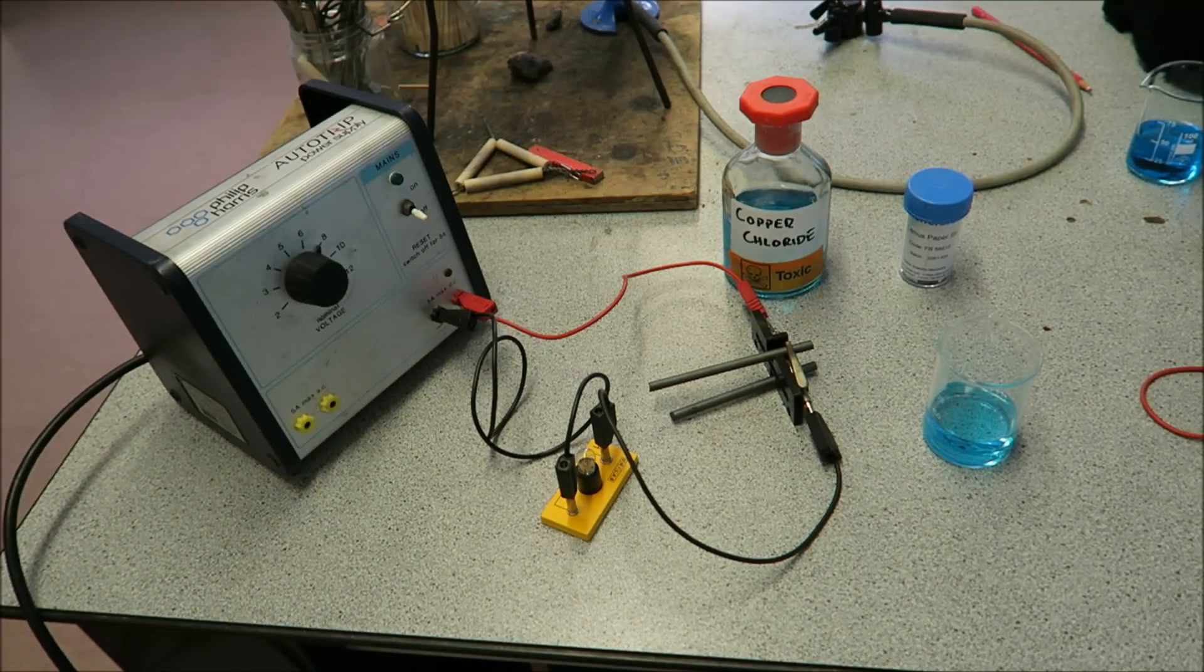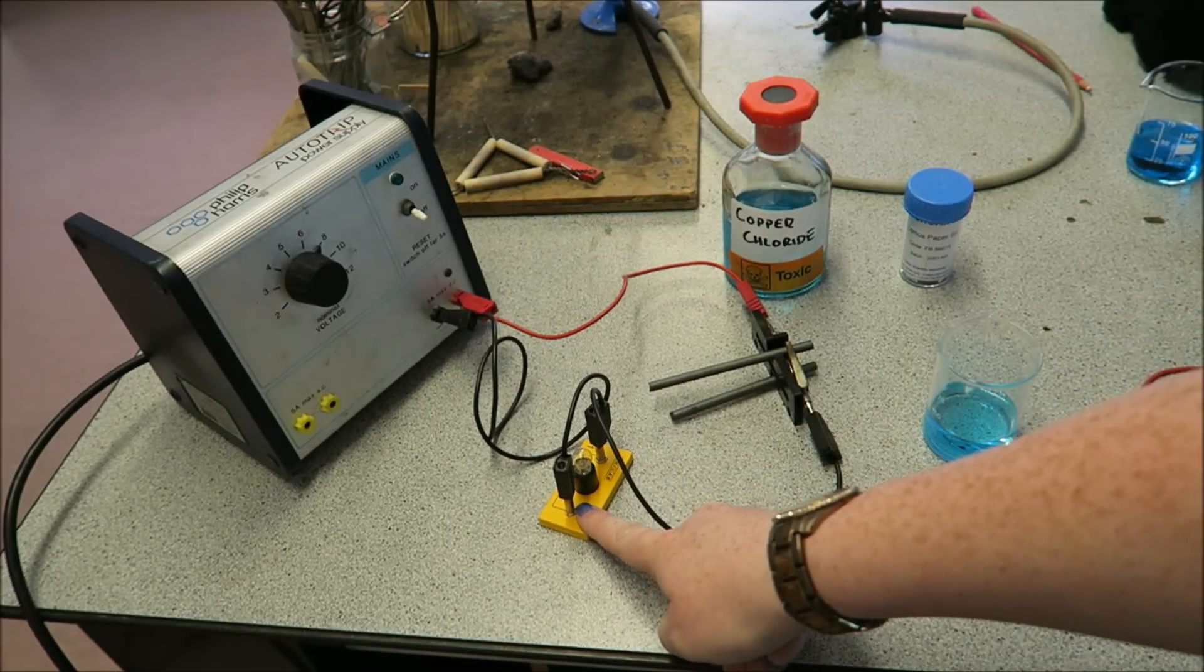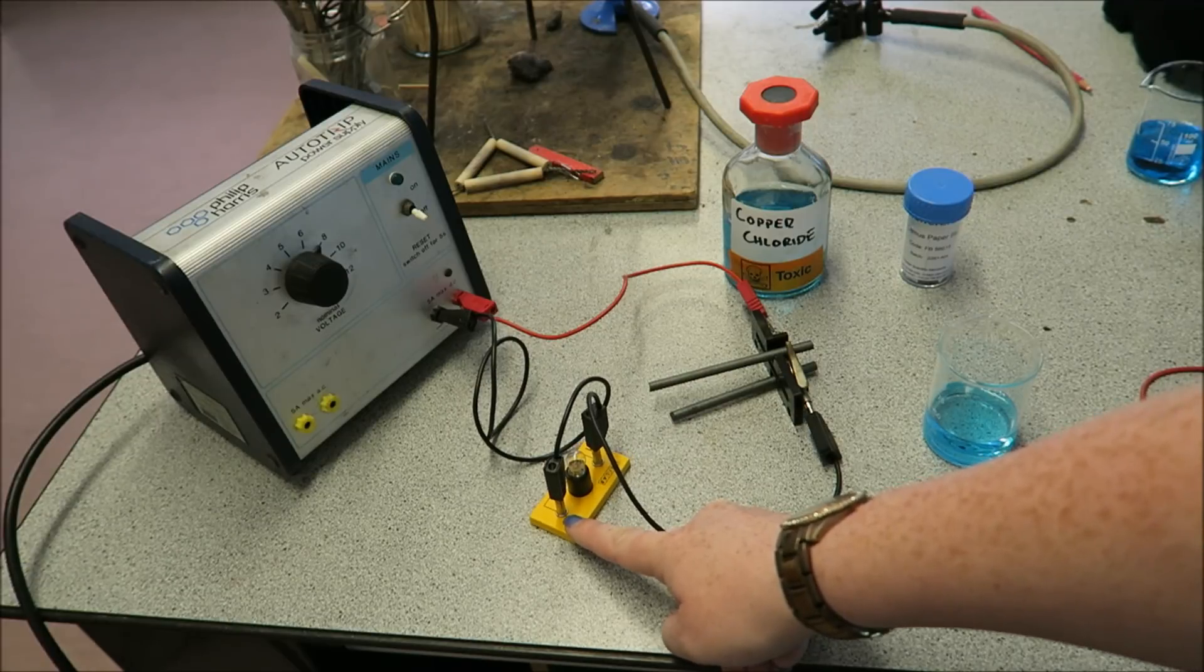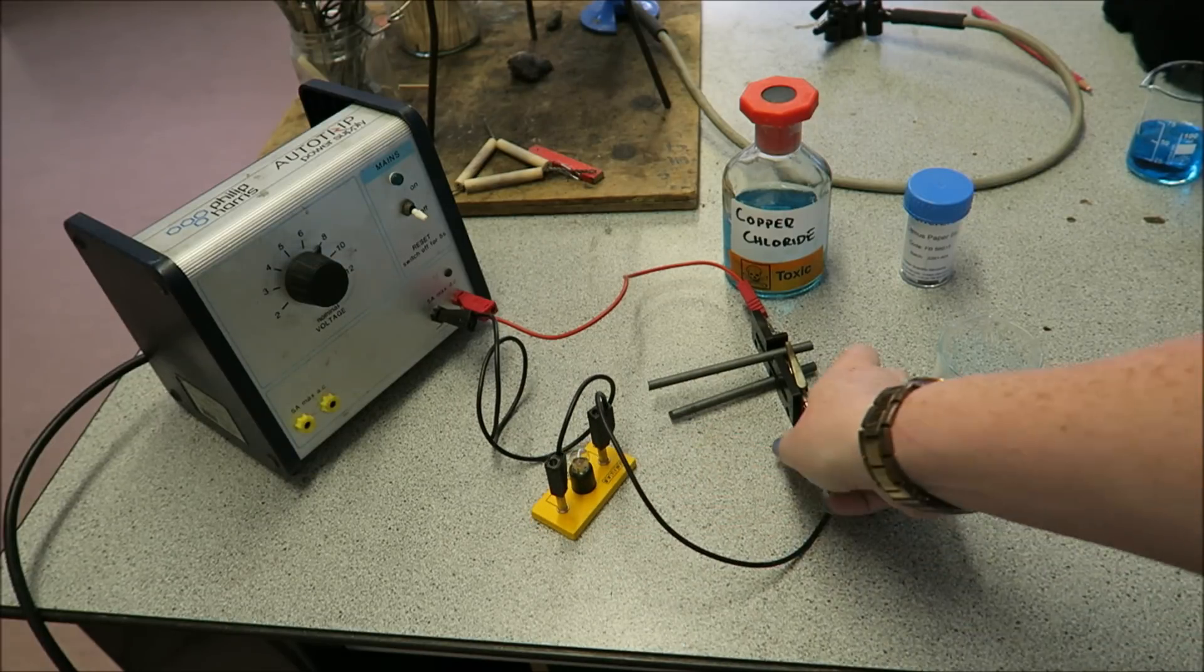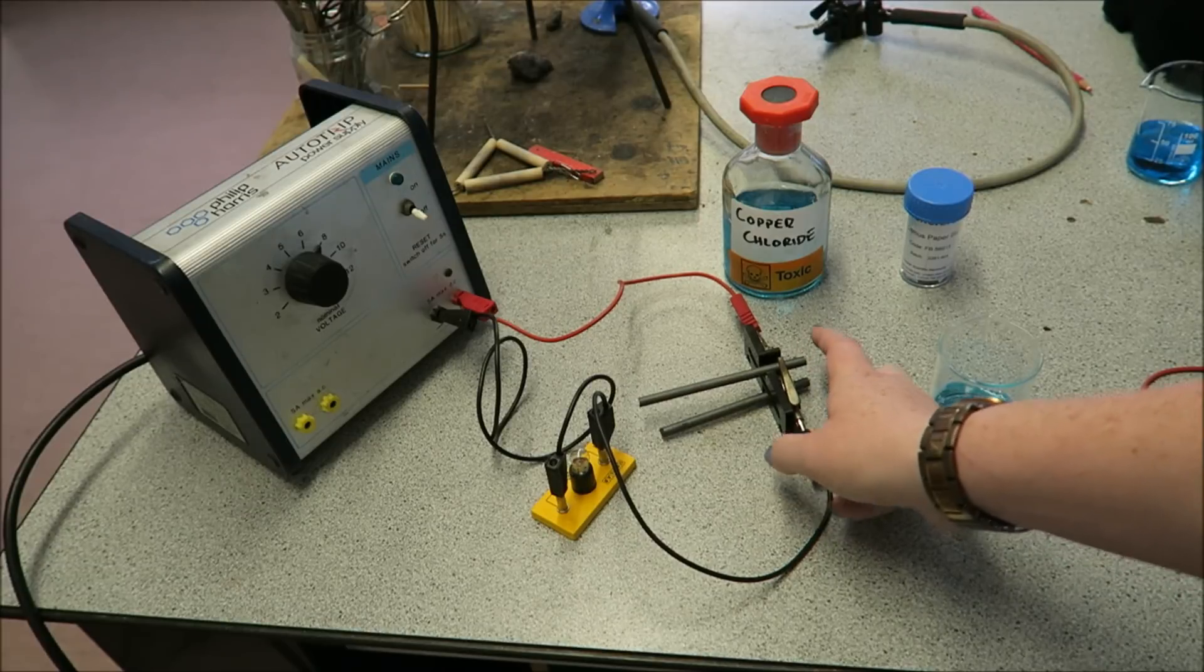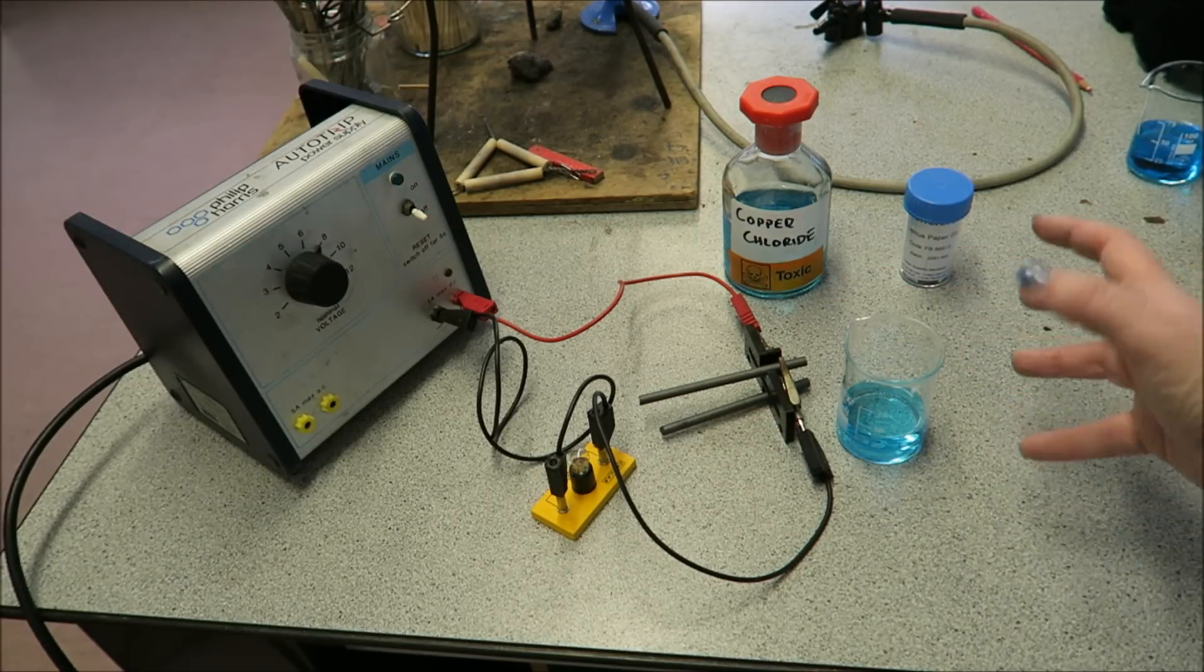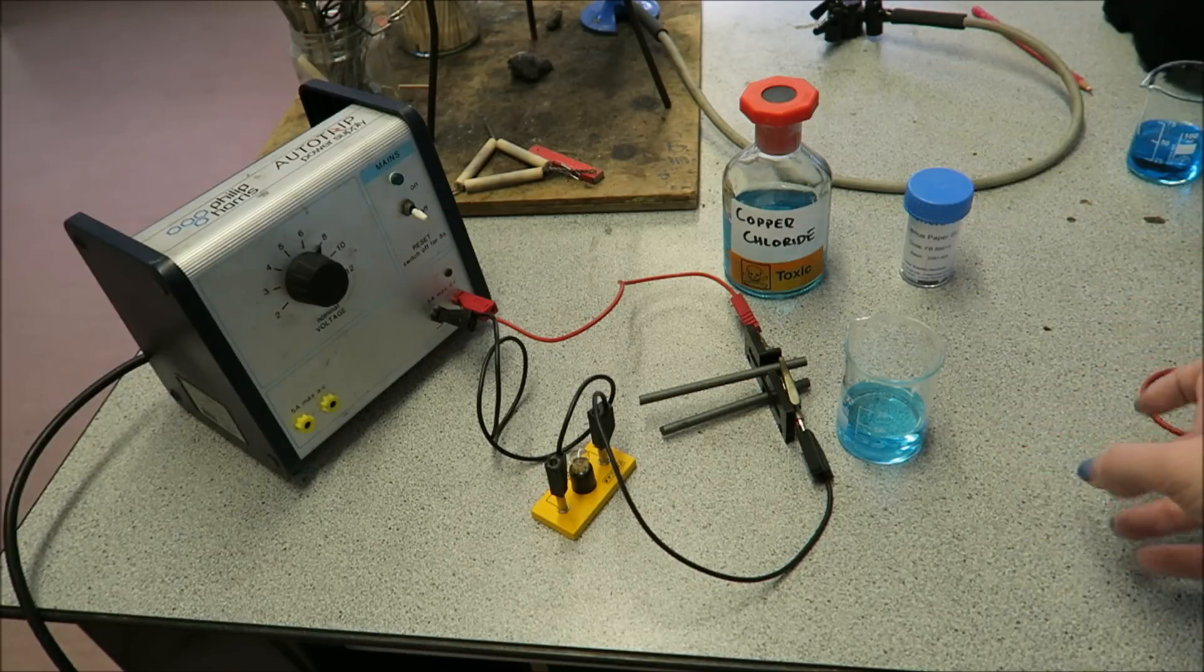Here we're going to be doing the electrolysis of copper chloride. You can see over here we have a power pack. It is connected up to a bulb. That's just to show me that the circuit is working. I have the ends of the wires connected to two graphite electrodes. And I have a little beaker with between 25 and 50 centimeters cubed of copper chloride.